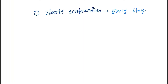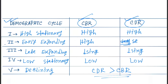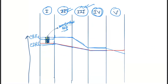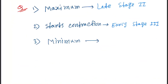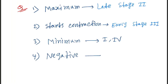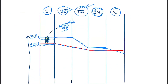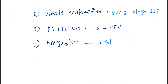The answer for contraction is early stage three. Next question: where is the demographic gap minimum? The answer is stages one and four, as the gap is larger in the other phases. Finally, where does the demographic gap become negative? The answer is stage five.